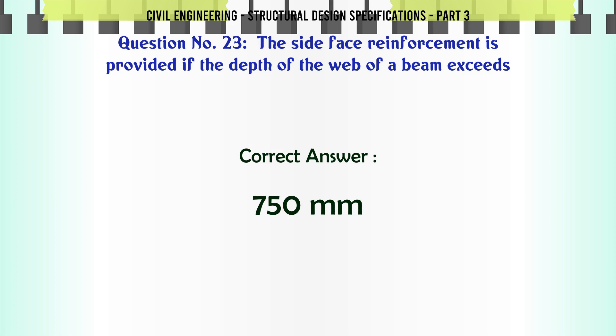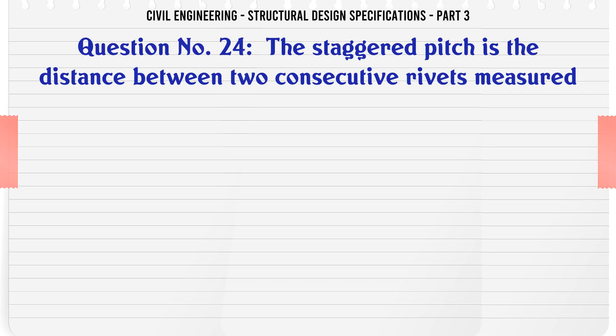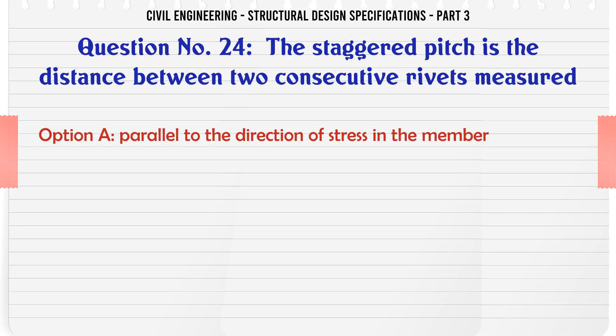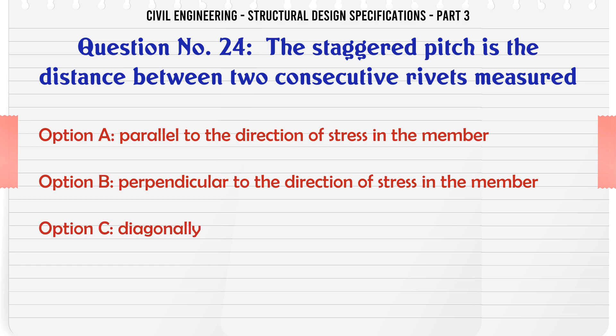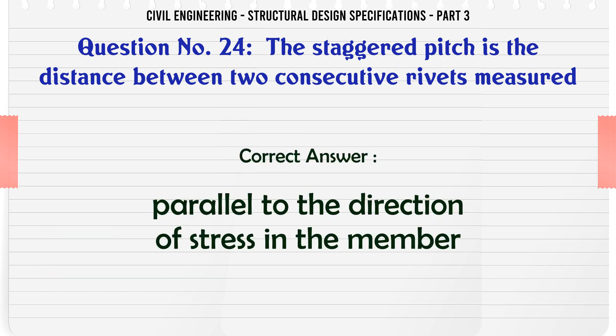The staggered pitch is the distance between two consecutive rivets measured: a. Parallel to the direction of stress in the member, b. Perpendicular to the direction of stress in the member, c. Diagonally, d. None of these. The correct answer is: parallel to the direction of stress in the member.